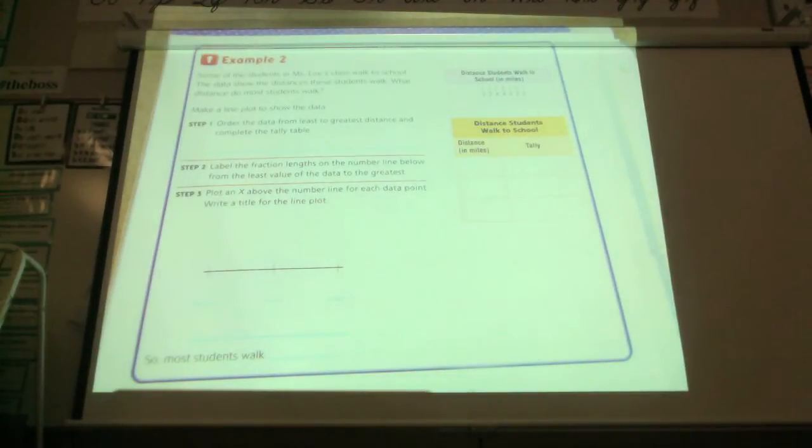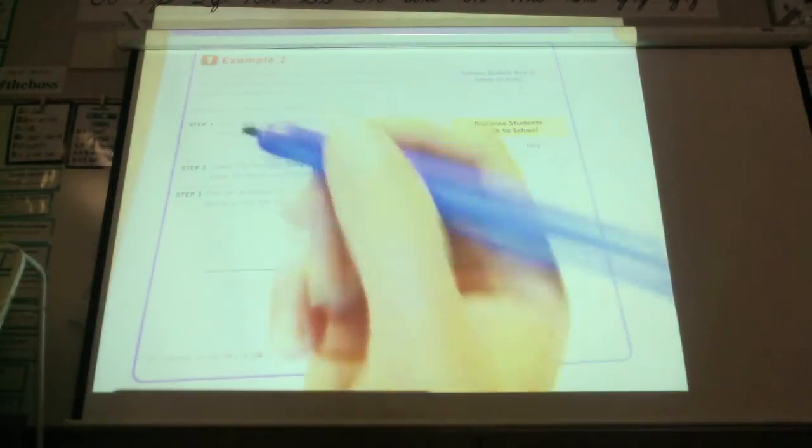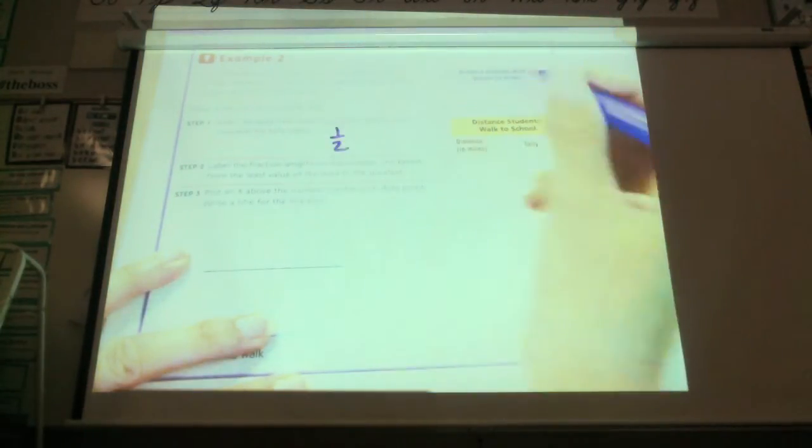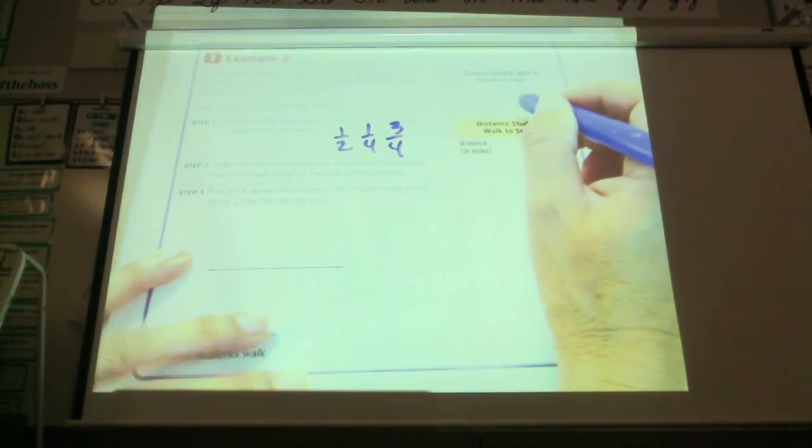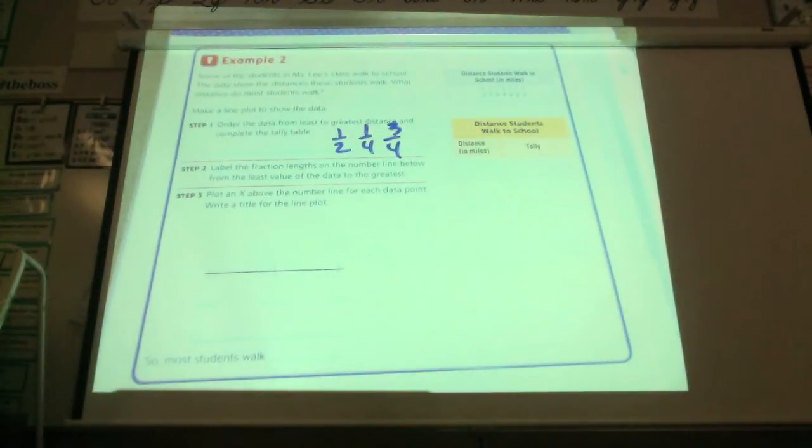Some of the students in Ms. Lee's class walk to school. The data show the distance these students walk. What distance do most students walk? So you can see the data over here. It says the distance students walk to school one-half and miles, by the way, in miles. So one-half, one-half, one-fourth, three-fourths, one-fourth, one-half, and one-half. Now I have to put, remember the first thing we're going to do is order the data from least to greatest. I have my numbers. The first thing I want to do is write down which ones I see. I see a one-half. I see a one-fourth. I see a three-fourths. I see a one-fourth, I already got that. And I see a half, and I got that already.